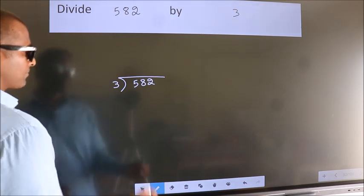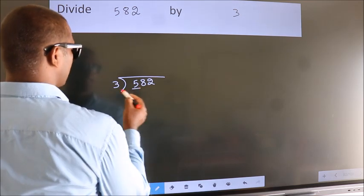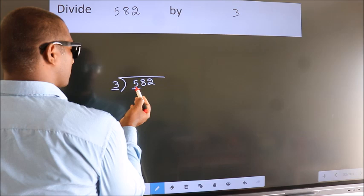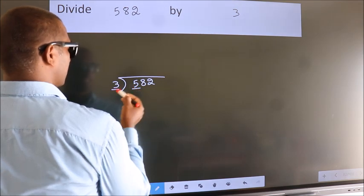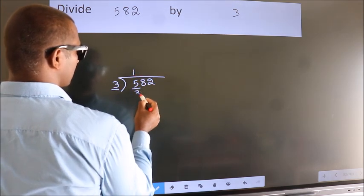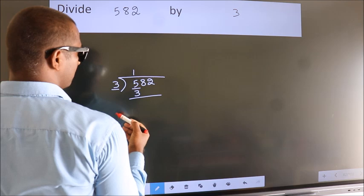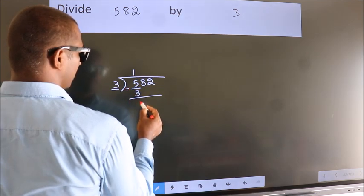Next, here we have 5, here 3. A number close to 5 in the 3 table is 3 times 1 equals 3. Now we should subtract. We get 2.